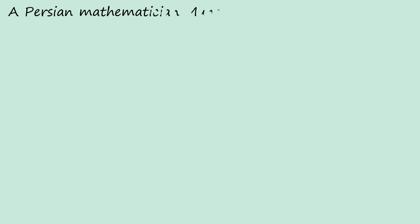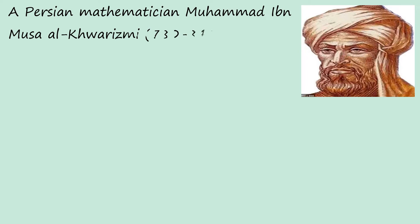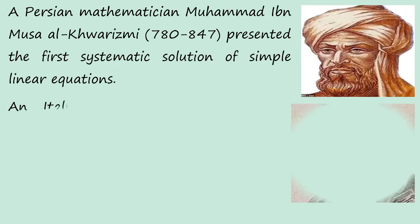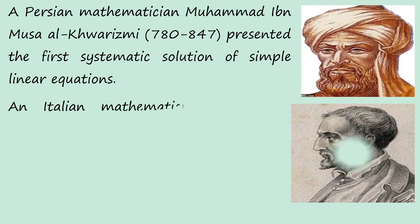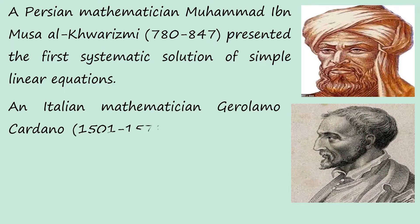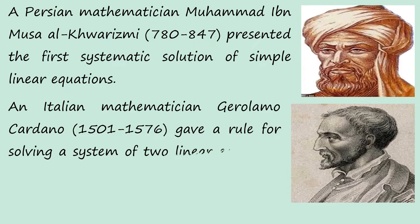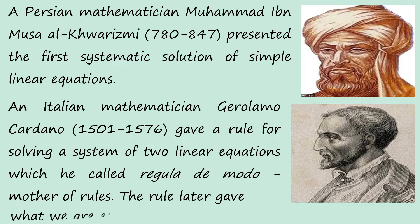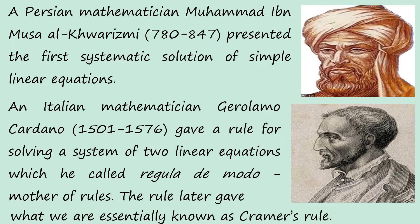A Persian mathematician, Mohamed Moussa Al-Khwarizmi, presented the first systematic solution of simple linear equations. An Italian mathematician, Gerolamo Cardano, gave a rule for solving a system of two linear equations, which he called 'regula de modo,' meaning 'mother of all rules.' This rule later gave what was essentially known as Cramer's rule.